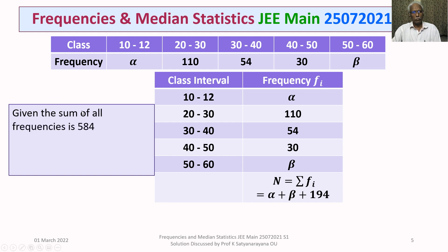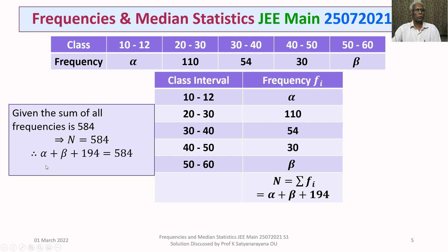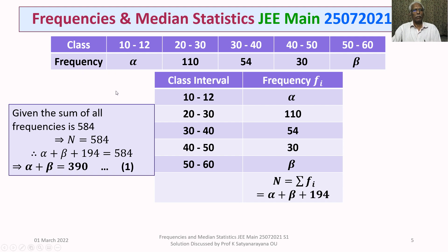It is given in the problem that the sum of all frequencies is 584, so N equals 584. But N equals alpha plus beta plus 194, giving alpha plus beta equals 390. This is equation 1 connecting alpha and beta. We now use the median information to find |alpha minus beta|.